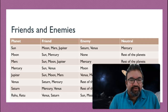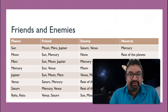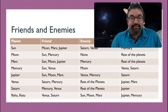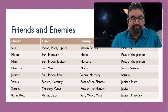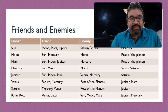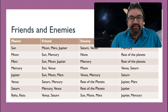Now let's think about planetary friends and enemies. If two planets in a chart are enemies of each other, that will be conflicting and causes more hardships and problems. For the Sun, the friends are Moon, Mars, and Jupiter. The Sun's enemies are Saturn and Venus, and Mercury is neutral. For the Moon, the friends are Sun and Mercury, there are no enemies, and the rest of the planets are neutral.